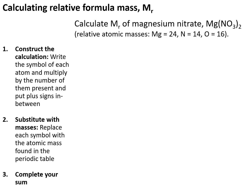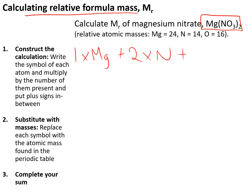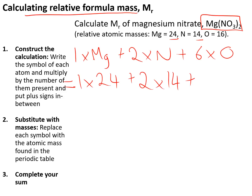Topic 9: mass calculations. The relative formula mass of a compound is calculated by adding together the masses of all the atoms in it. For example, magnesium nitrate contains one magnesium, two nitrogens, and six oxygens. Using atomic masses — magnesium is 24, nitrogen is 14, oxygen is 16 — we calculate: 1×24 + 2×14 + 6×16, giving a relative formula mass of 148.